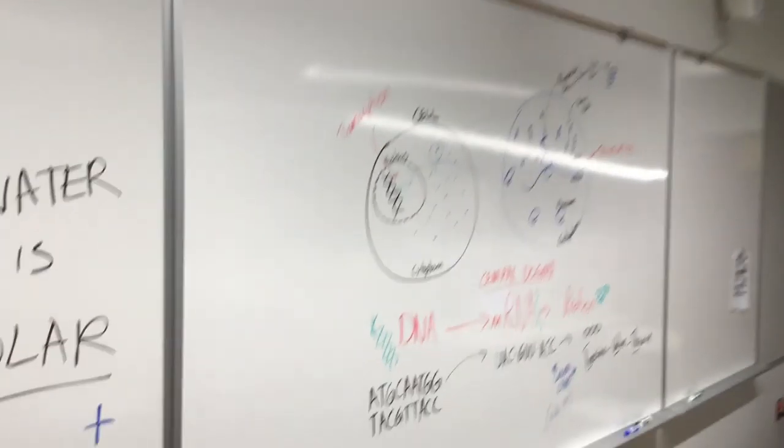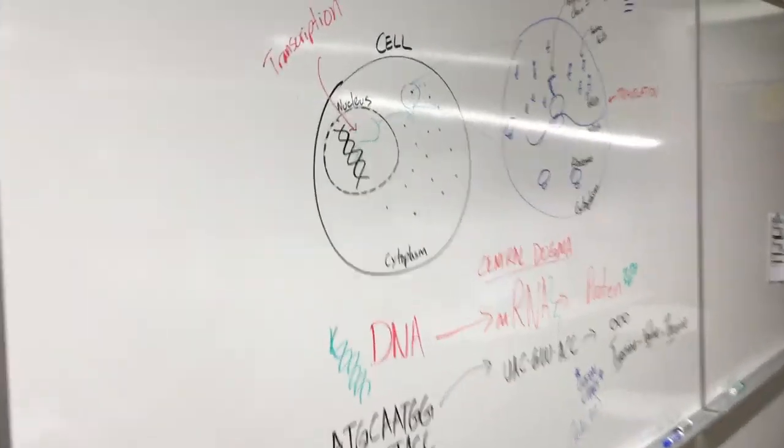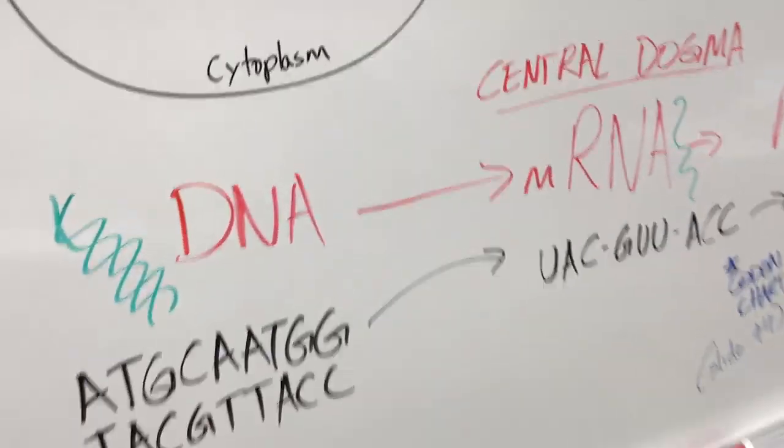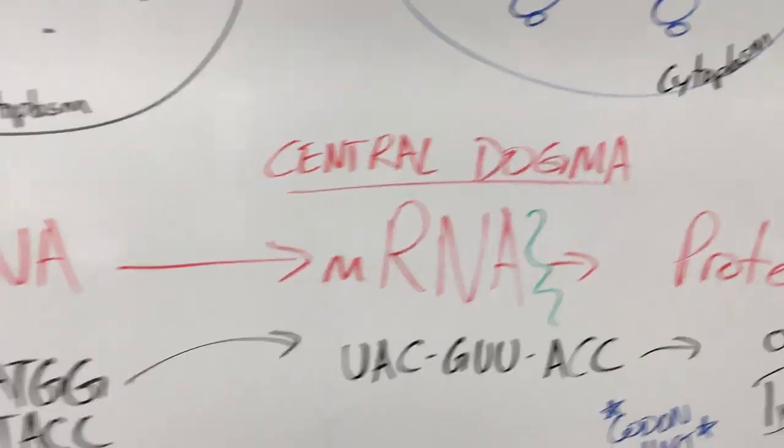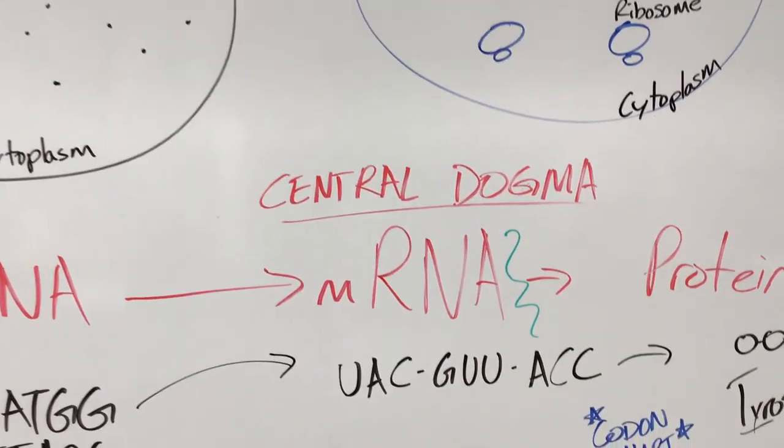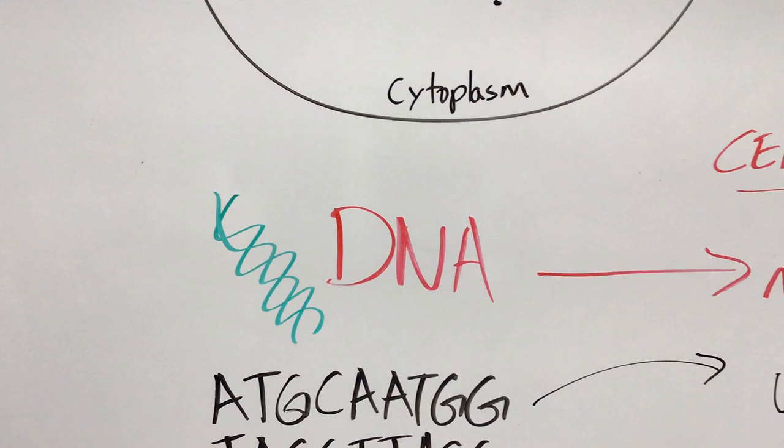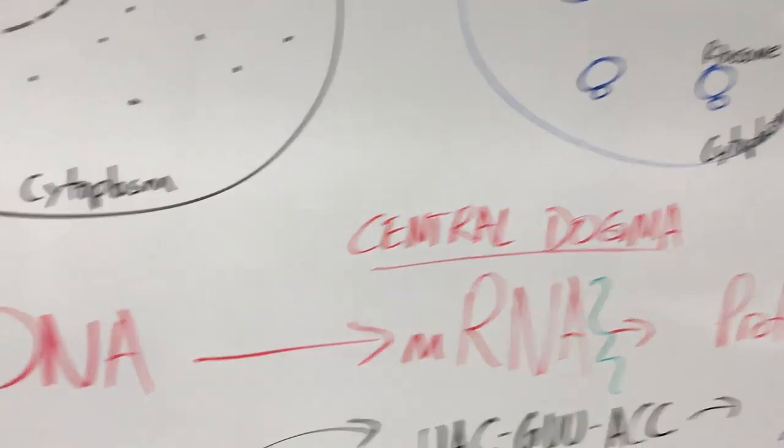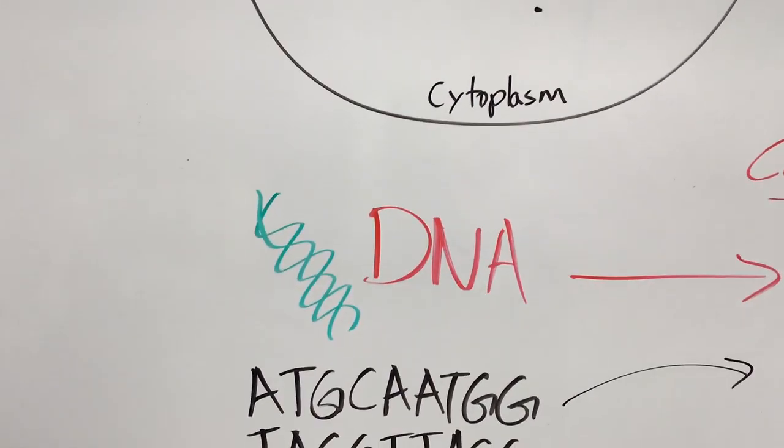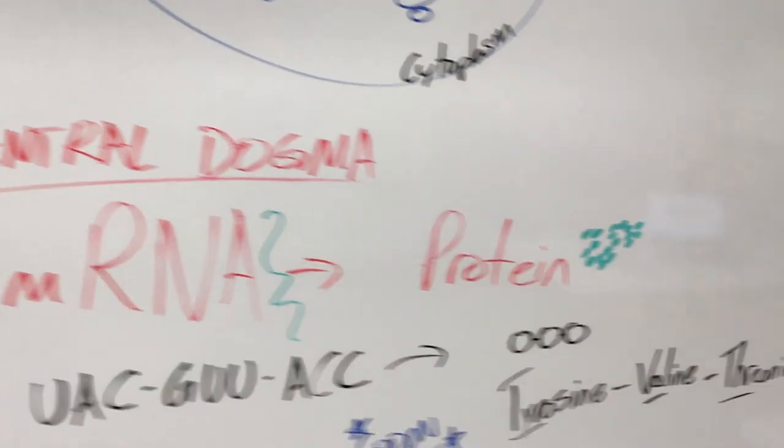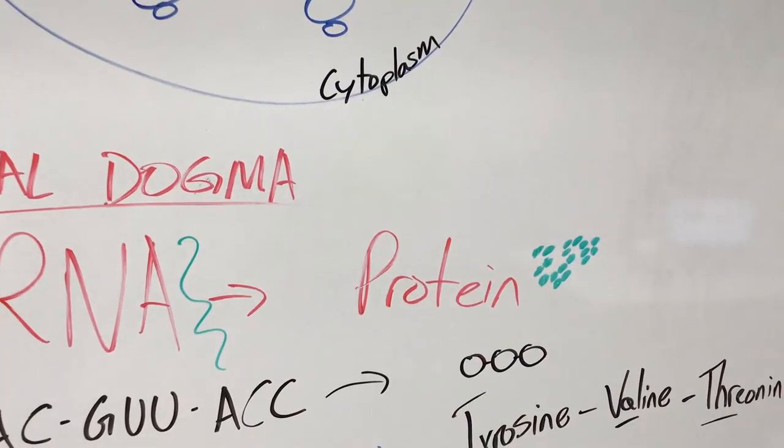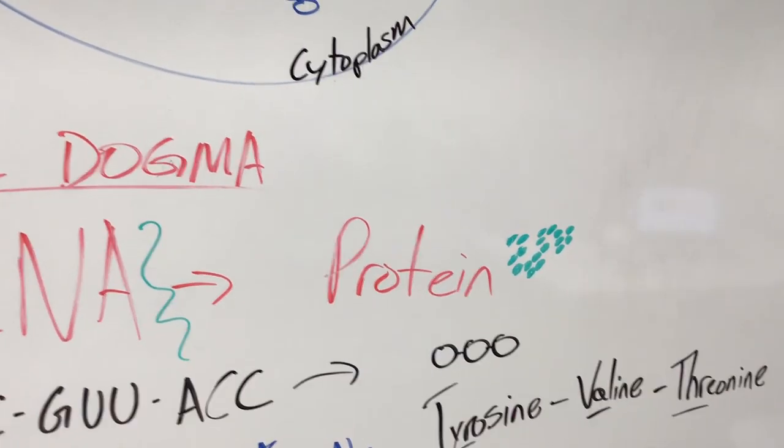So I'm going to go closer to the board and we're going to go step by step through this whole process. First things first, everything we're doing is generally referred to as the central dogma. The central dogma is the process in which we start with a DNA molecule and eventually wind up with these protein compounds that are just little amino acids put together.